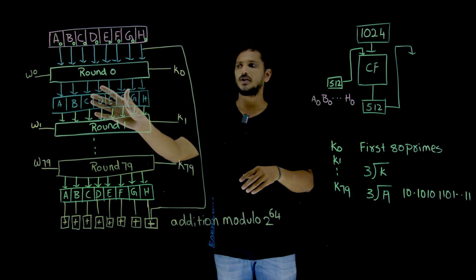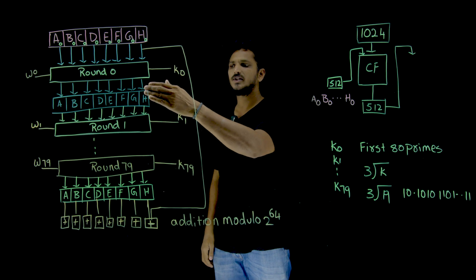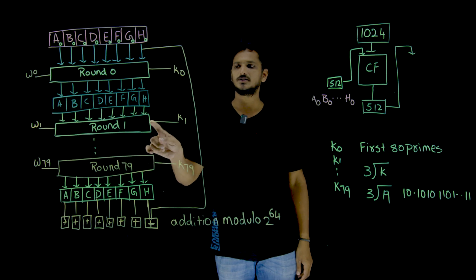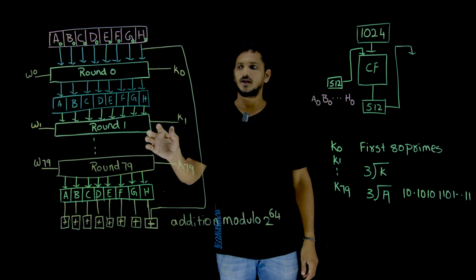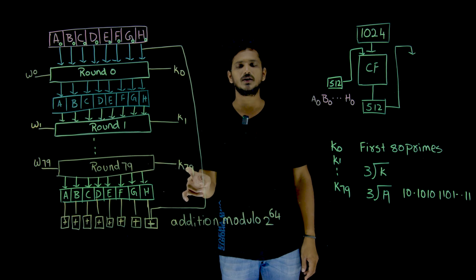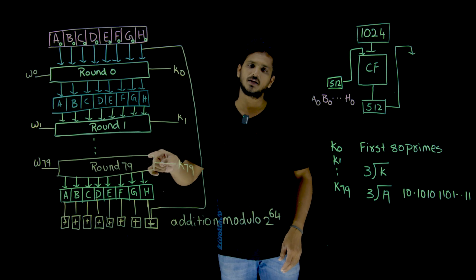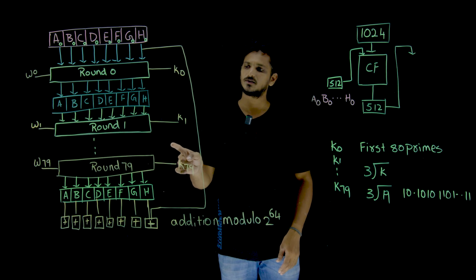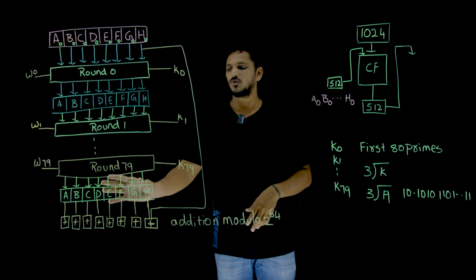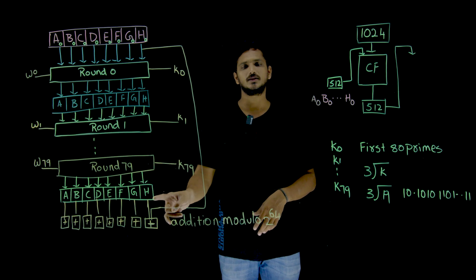From round 0, you are going to get an output: A1, B1, C1 up to H1. This is given as input to the next round. For the next round, W1 is taken as input and K1 is also taken as input. It is going to generate the next output. Like that, it keeps on going. For the last round, K79 and W79, and whatever A78, B78, C78 so on up to H78, is going to be the input. And it is going to generate the final output, which we call A79, B79, so on up to H79.